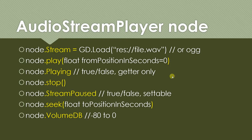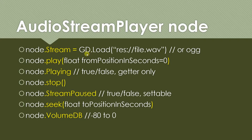Next I want to show you some properties and methods of the Audio Stream Player. You can edit these through the Inspector tab or through code. You have the stream property, which is basically just the file that's playing. You can use the gd.load function and pass in the path to the file. You can only play WAV files and OGG files.